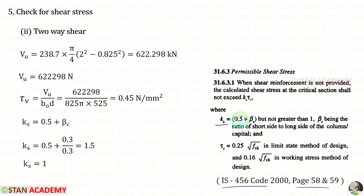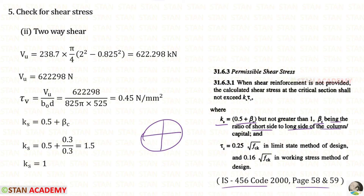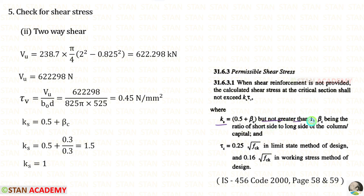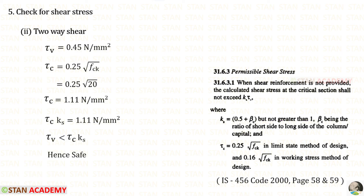Opening code book page 59, we find KS equals 0.5 plus beta C, where beta C is the ratio of short side to long side of the column. Since our column is circular, in all directions the diameter is 0.3 m, so beta C equals 0.3 upon 0.3 which is 1. KS would be 1.5, but KS must not exceed 1, so we keep KS as 1. Tau C equals 0.25 root of FCK; with FCK of 20, tau C is 1.11 N/mm².